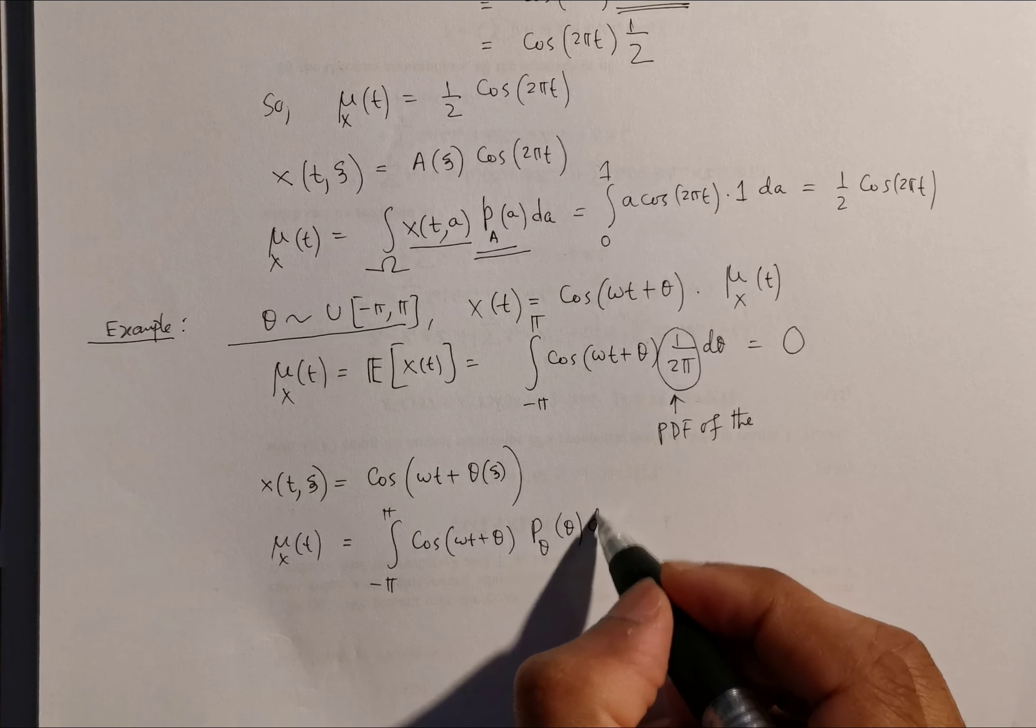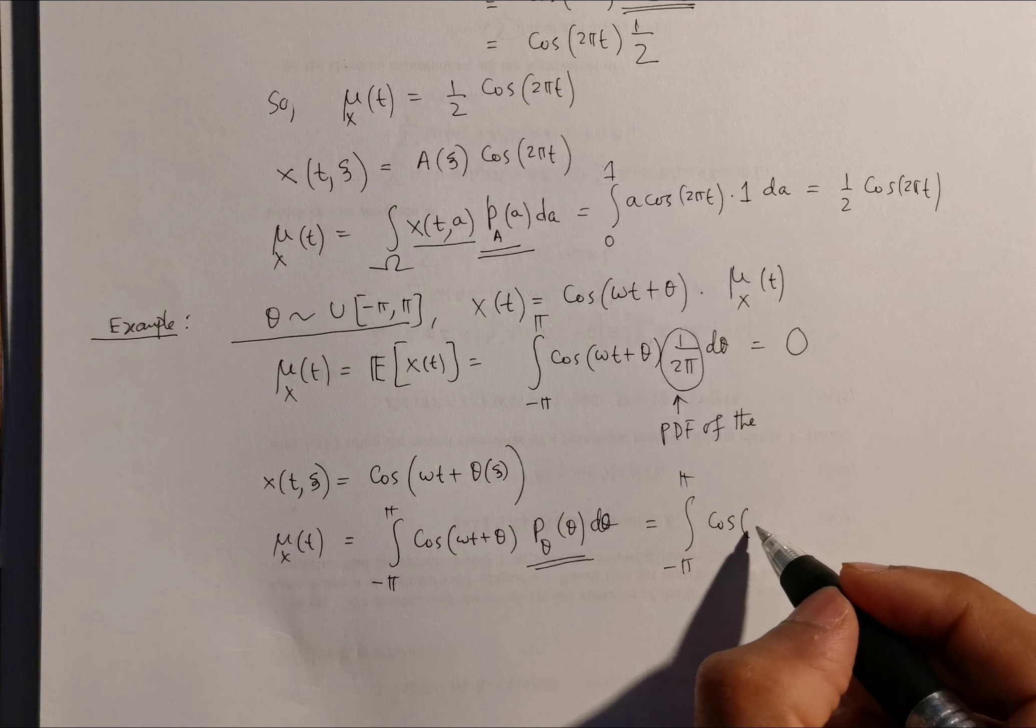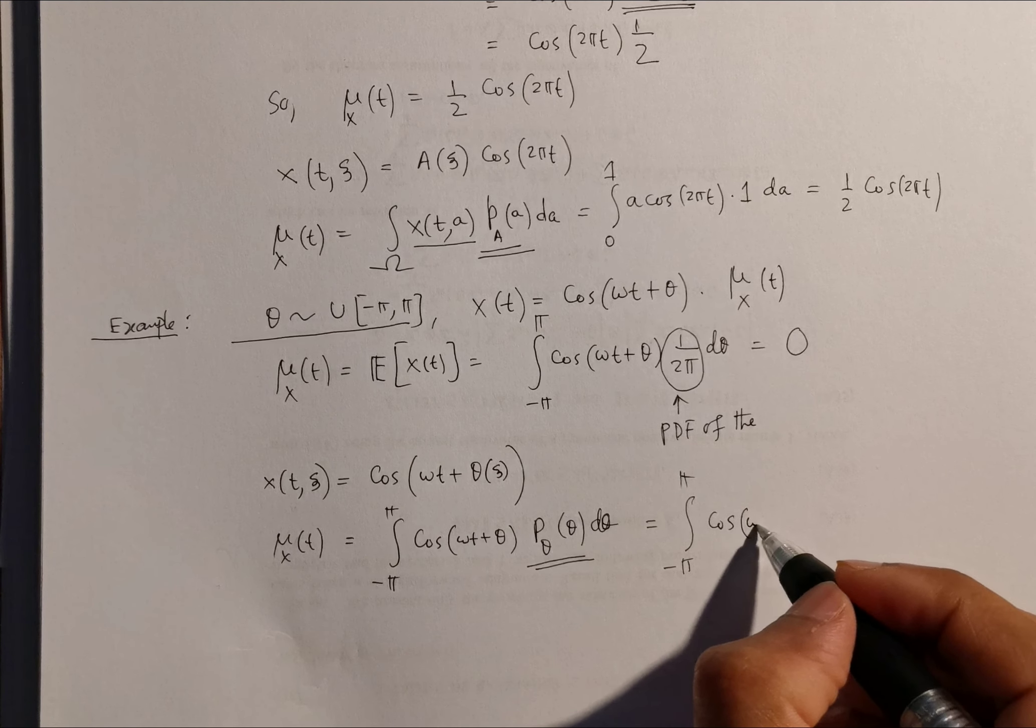So in this case, this will be just 1 over 2π, the integral from -π to π of cos(ωt + θ) times 1/(2π) dθ, and hence equals 0.